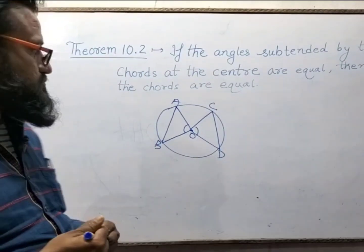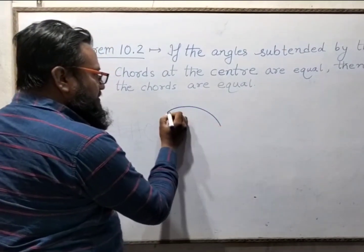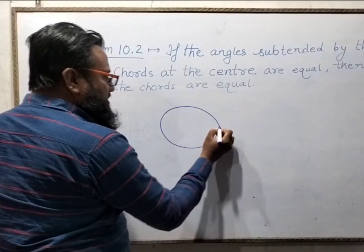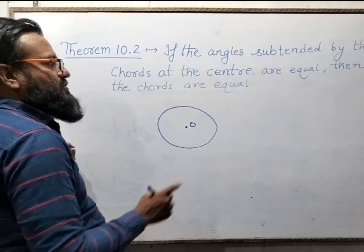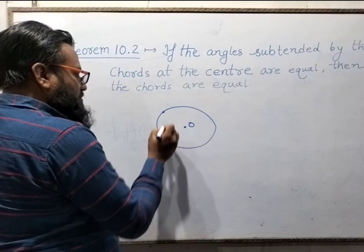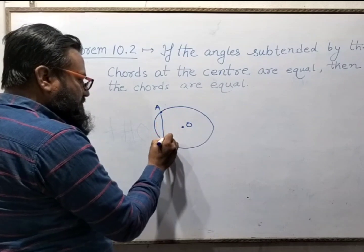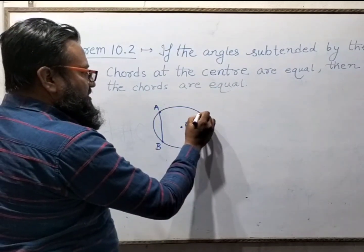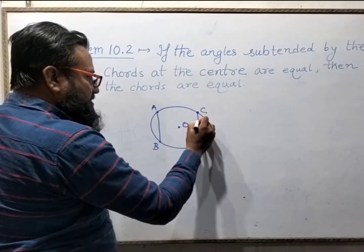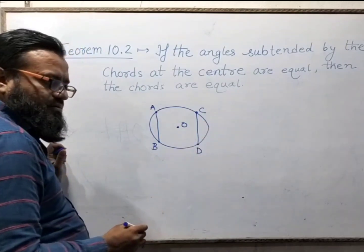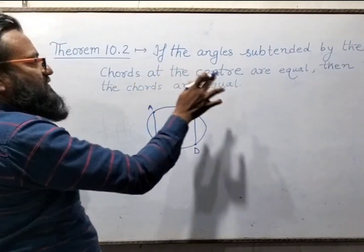To prove this theorem, we shall draw a circle. Let this be a circle with center O. We shall draw two chords. Take two points A and B and join them — this will be the first chord. Take another two points C and D and join them — this will be the second chord. According to the theorem, the angles subtended by the chords at the center are equal.